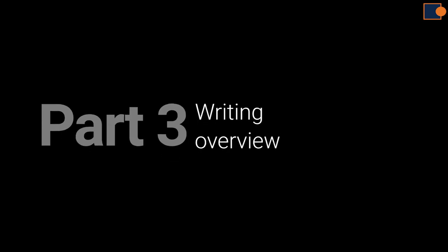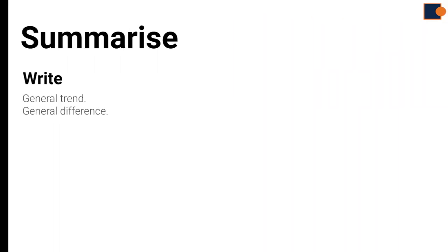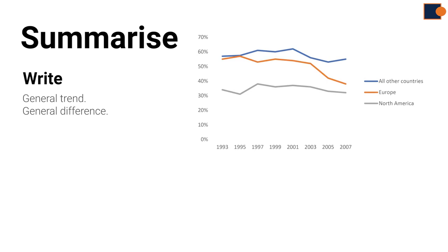Part 3 Overview. So writing overview means summarizing the whole essay by explaining general trends and differences. Define general trends, study beginning and ending points of each trend, and then summarize the general pattern.